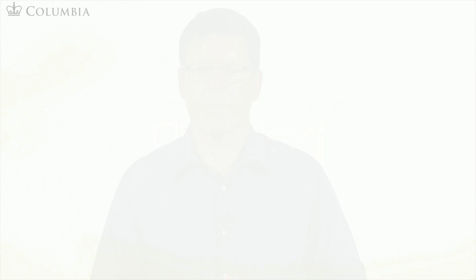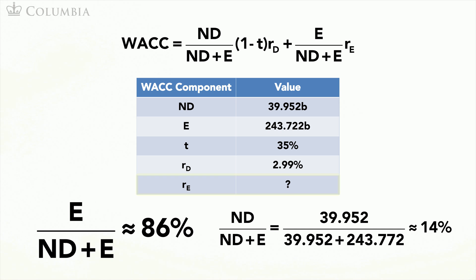Another example where you will need this method is when you are trying to value a firm that does not exist yet. Now, let's go back to the weighted average cost of capital input table. The only place in which we use Walmart's beta was in the calculation of the cost of equity. We will do this again using a beta estimated from comparable firms.